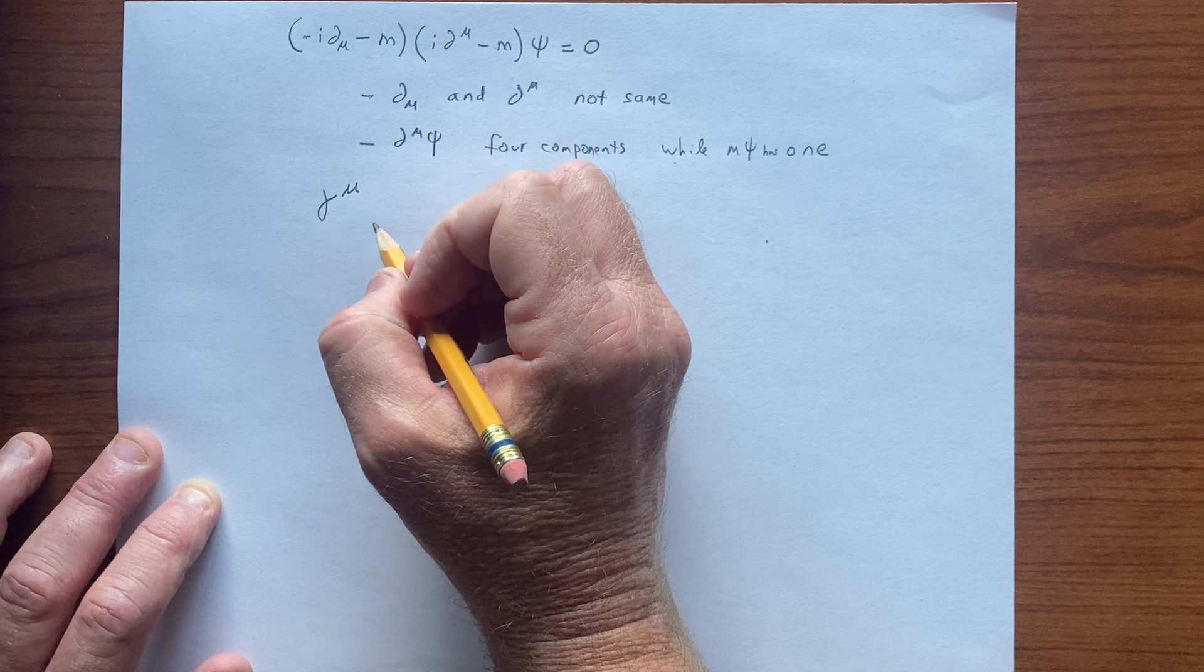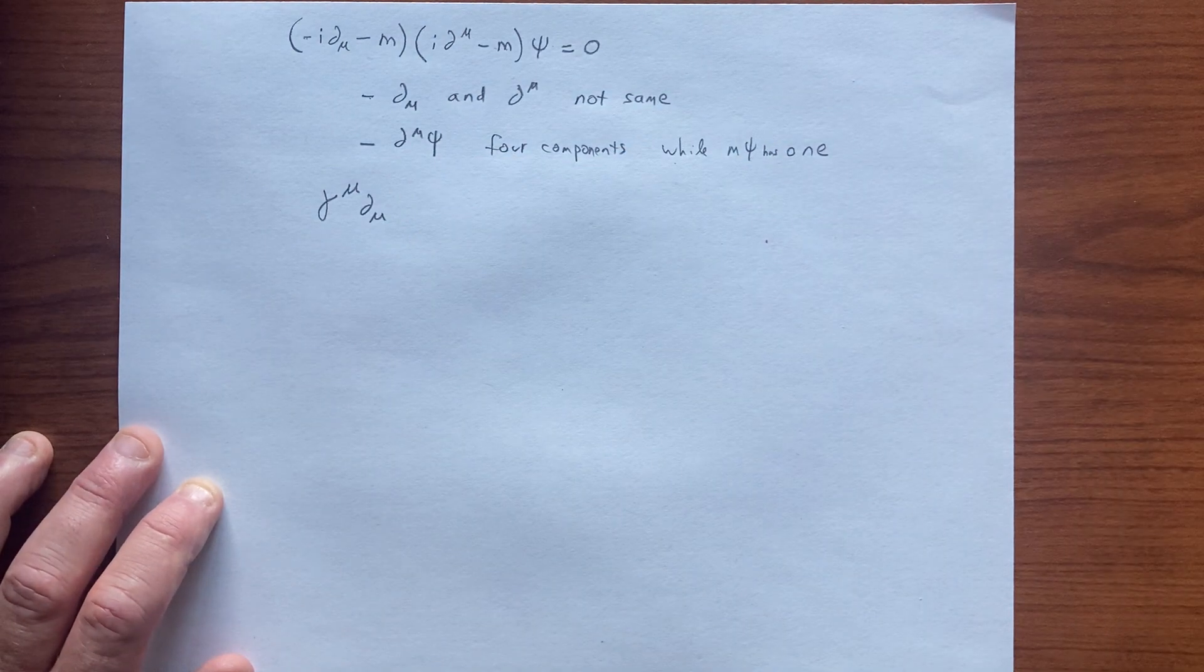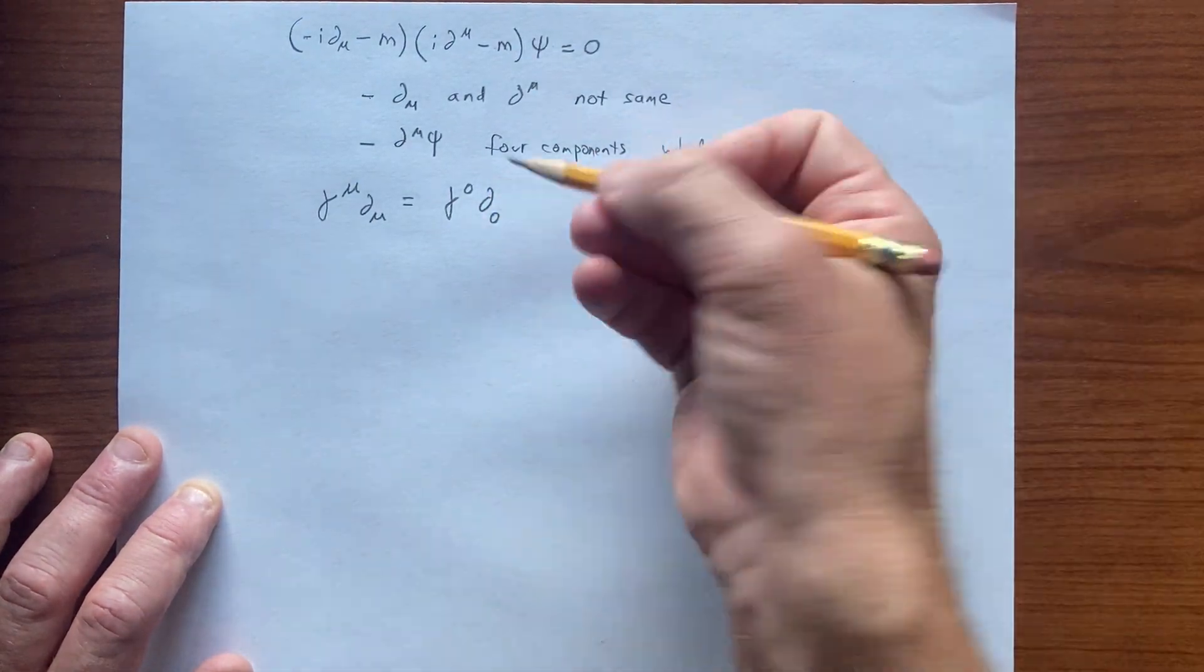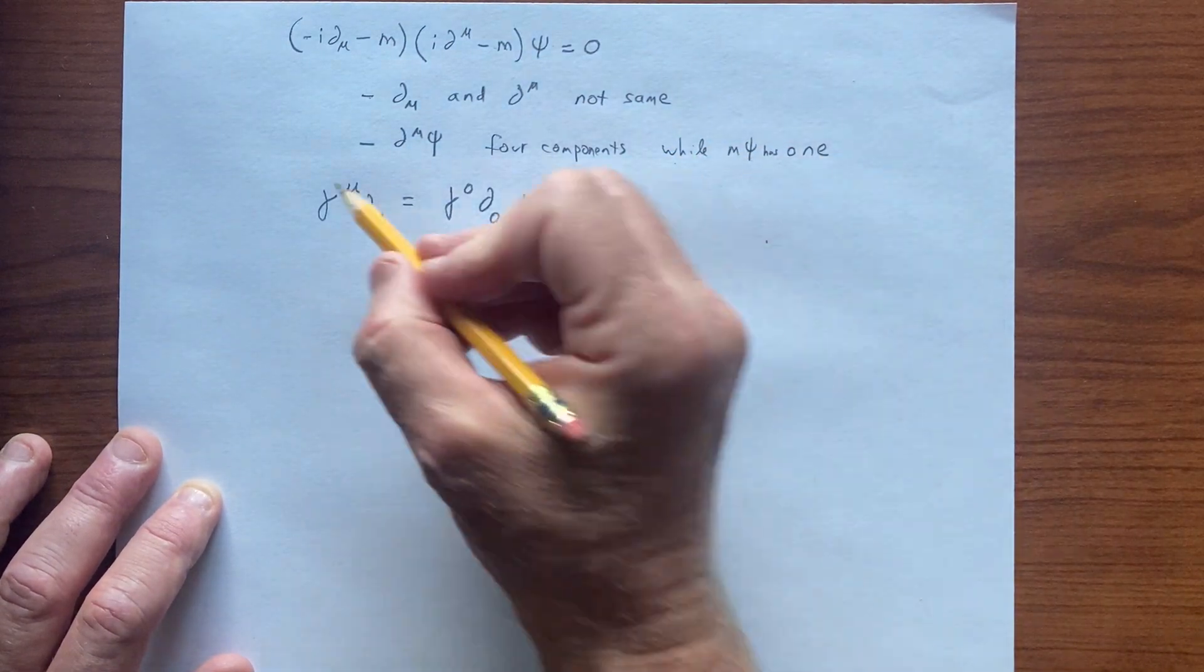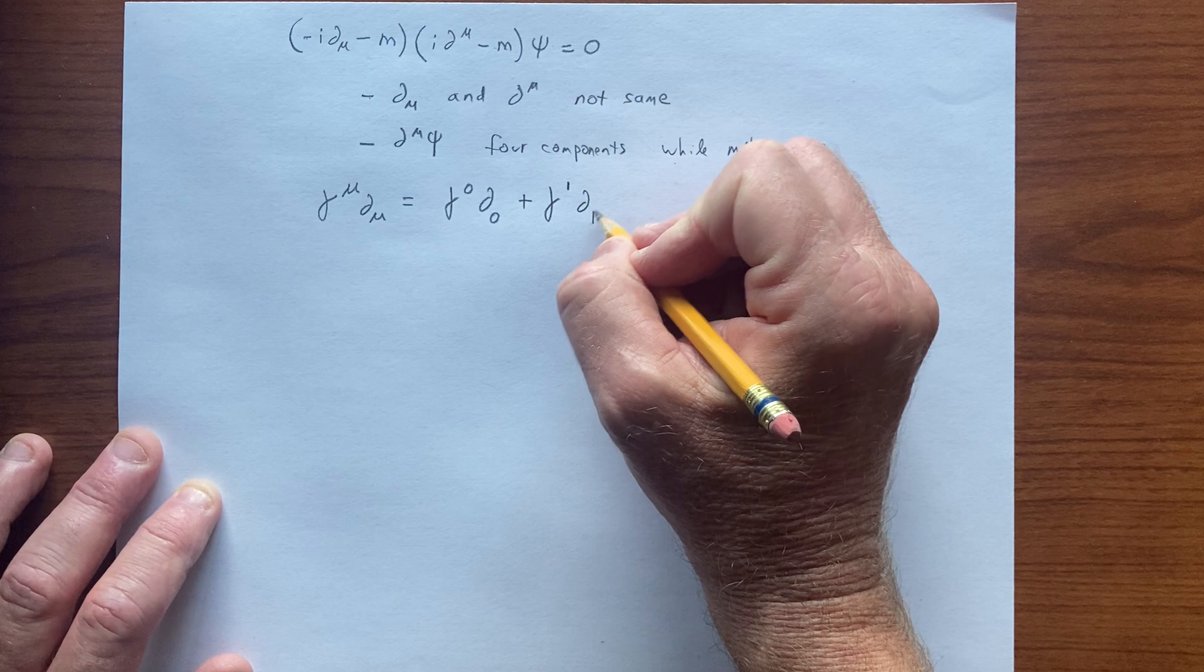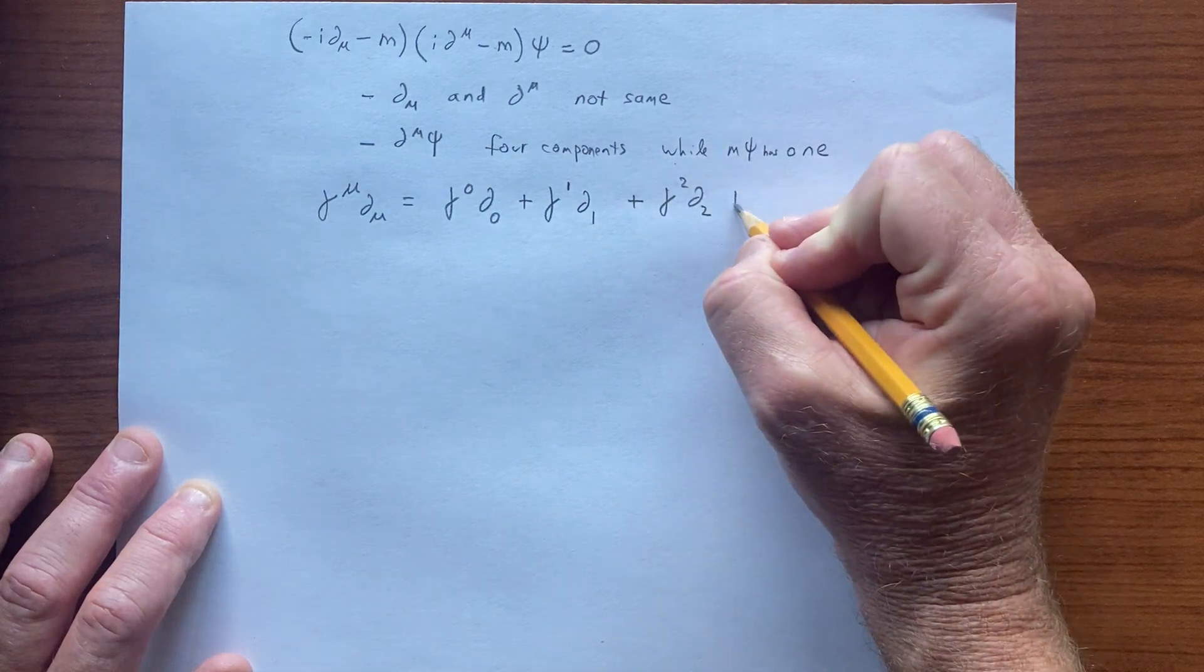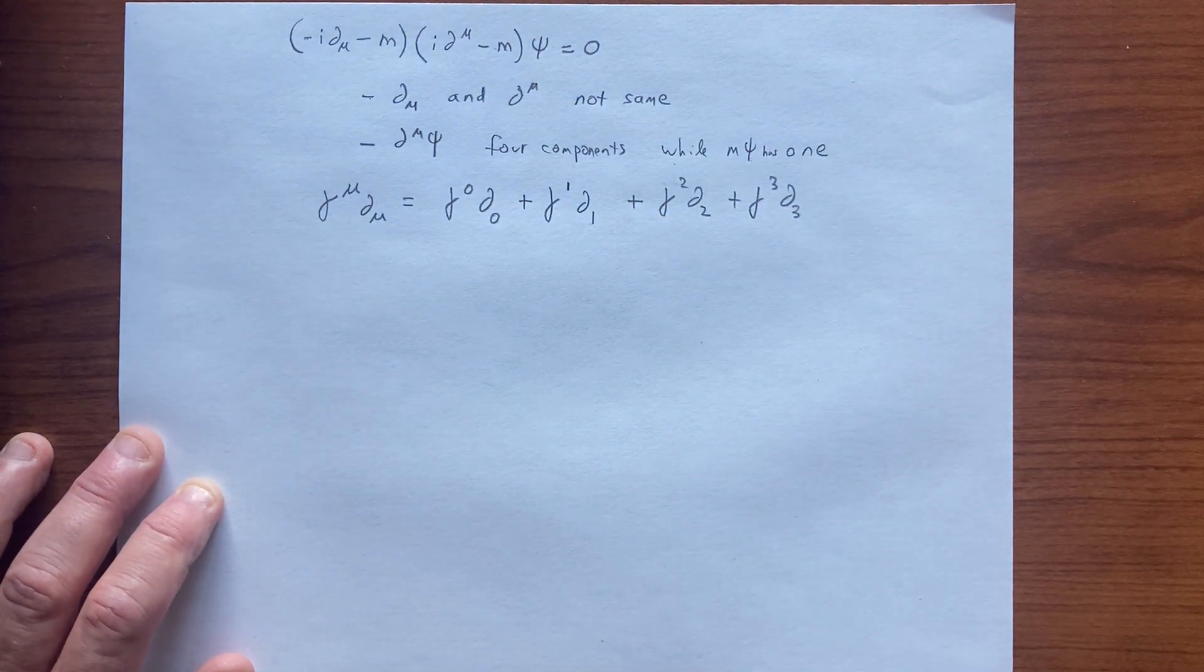This will give us gamma^0 d/d0 (d by dt if that's time), plus the first component times d/d1 (which could be d by dx), plus gamma^2 d by dy, plus gamma^3 d by dz (the third spatial component).